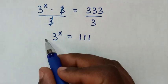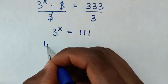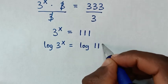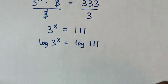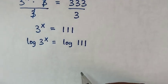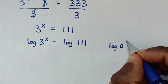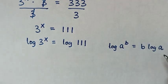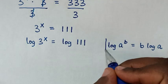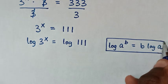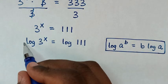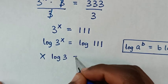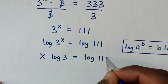Then we'll apply log on both sides. So it will be log of 3 power x is equal to log of 111. Using the logarithm power rule, this power of x moves to the front, so it will be x log of 3 is equal to log of 111.